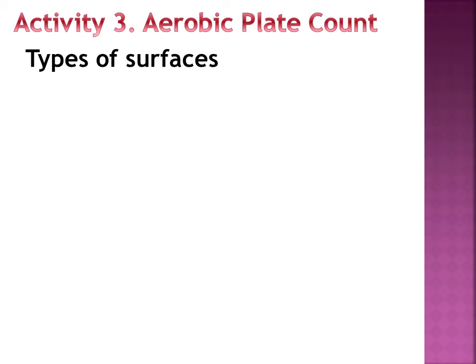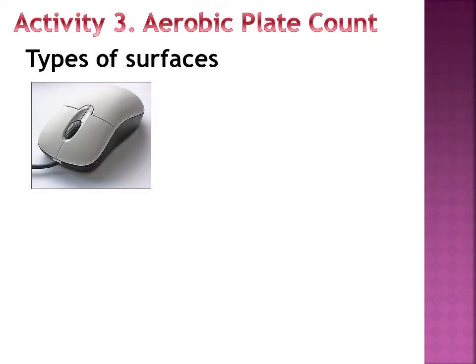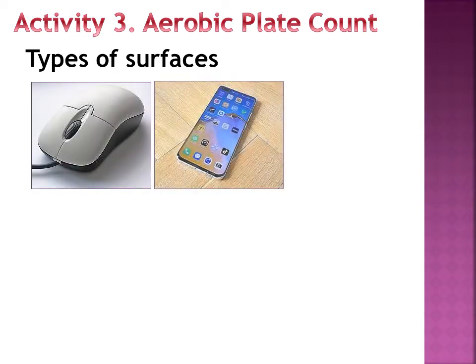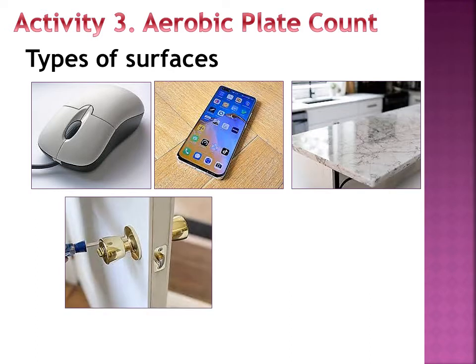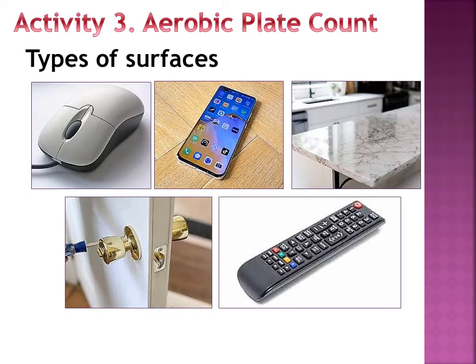The most common bacteria found on surfaces are aerobic bacteria. Aerobic bacteria are bacteria that can grow and live when oxygen is present. Examples of these surfaces include computer mouse, cell phones, kitchen counter, doorknobs, and your remote control.